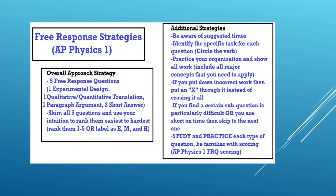What about the free response strategies in AP Physics 1? Overall, we have 5 free response questions. 1 experimental design. 1 qualitative slash quantitative translation. 1 paragraph agreement. 2 short answers. You need to skim all 5 questions and use your intuition to rank them easiest to hardest. Rank them from 1 to 5 or label as easy, moderate, and hard.